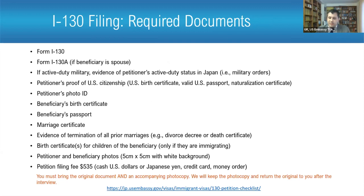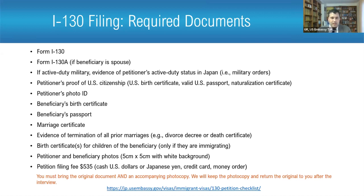There are a lot of documents required — there's no way around it. Most of them are things you already have. One important one to remember: if you've been married before and are petitioning for your current spouse, you'll need to show evidence of termination of those prior marriages — usually a divorce decree or a former spouse's death certificate. Bring the original and a photocopy; we'll keep both. This is required at the I-130 filing stage, whether you're filing here or with USCIS by mail.